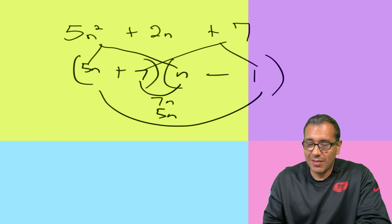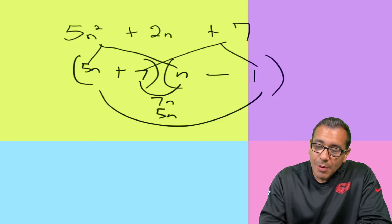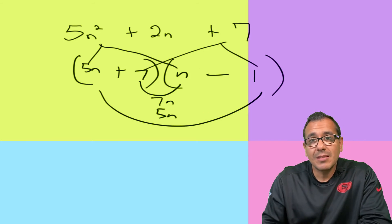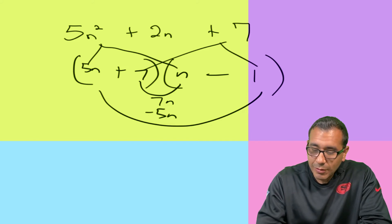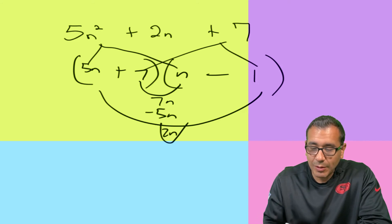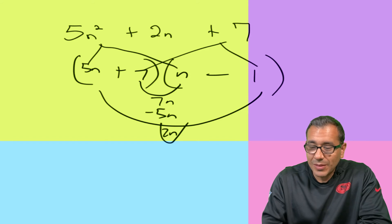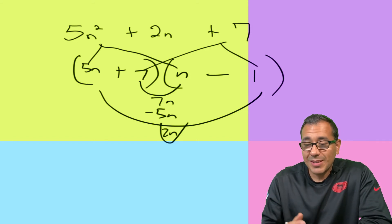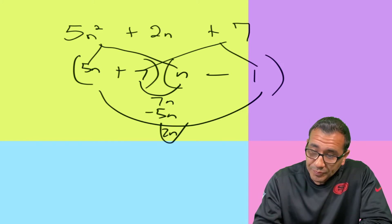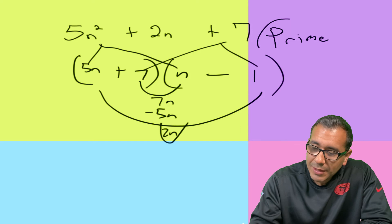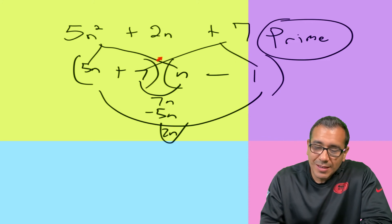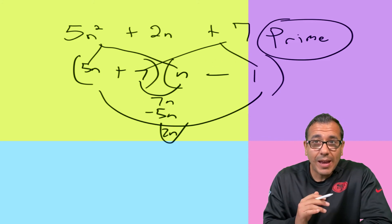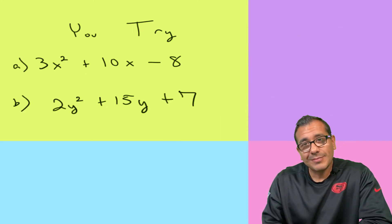It would only work if the 5n were negative, meaning the 1 is negative and the 7 is positive. But negative 1 times positive 7 does not give positive 7 — so this combination fails. Even switching the 7 and 1 won't help because the numbers are too far apart. Since we can't factor this, we say it's prime — it's not factorable. Not everything is factorable, and this method lets you confirm that very quickly.